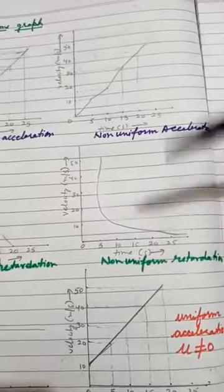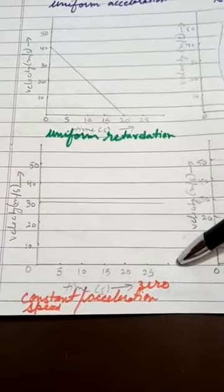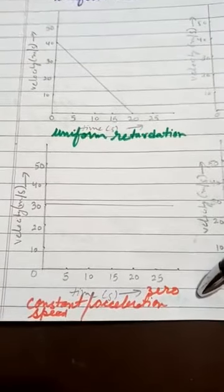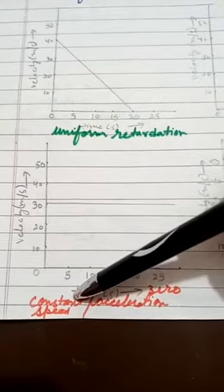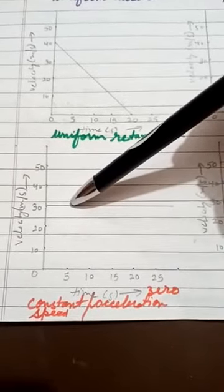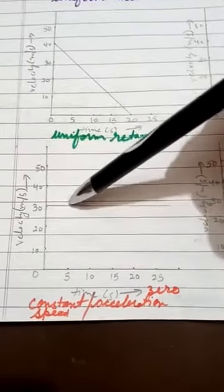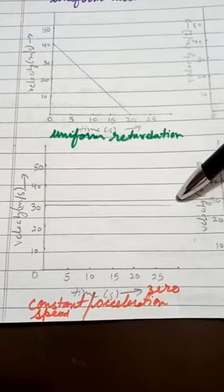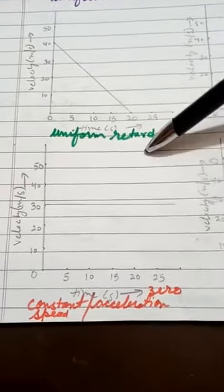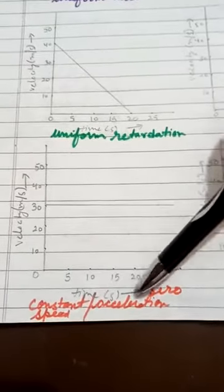For non-uniform retardation or deceleration, the graph is not a straight line — it may be a curve. The next graph is for constant speed or zero acceleration. When your velocity-time graph gives a slope parallel to the time axis, we can say acceleration is zero. Here, at every 5-second interval the body is moving with 30 m/s — constant speed throughout — so the body moves with constant speed and acceleration is zero.